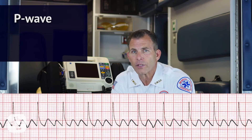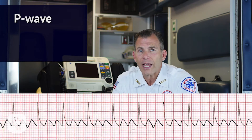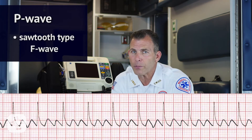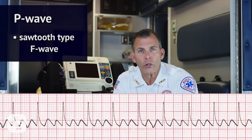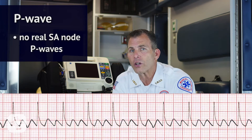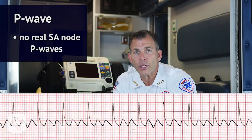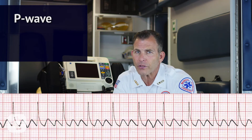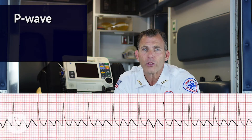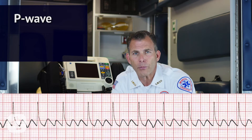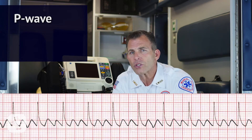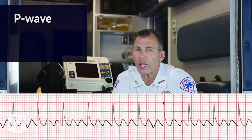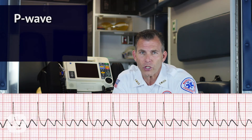Next, let's evaluate the P wave. Are they present? Anything closely resembling a P wave is actually a sawtooth-type F wave. Do they occur regularly? No, because there are no real SA node P waves. Is there one P wave for each QRS complex? Again, no. There's no P wave for each QRS complex. Are the P waves smooth, rounded, and upright? That doesn't apply because they are sawtooth in shape.